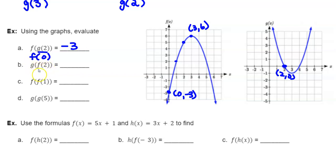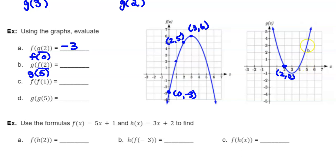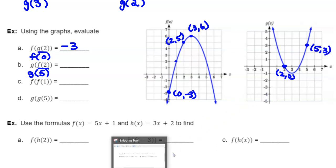For g of f of 2, go on the inside and find f of 2. On the f function, when x equals 2, the point is 2,5. So f of 2 equals 5. Now take that 5 and put it into the outside g function. When x equals 5, going along the x axis, I find the ordered pair 5,3 on the g graph. Therefore, g of 5 equals 3, and g of f of 2 equals 3.